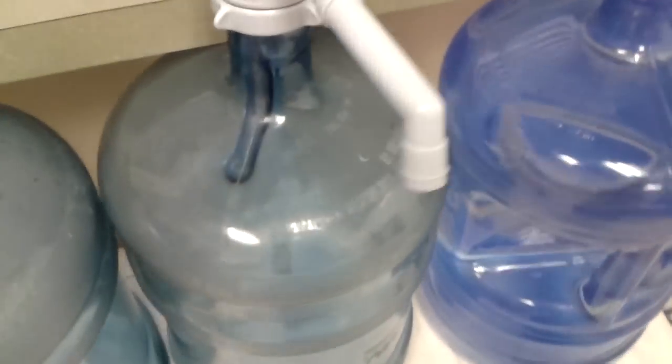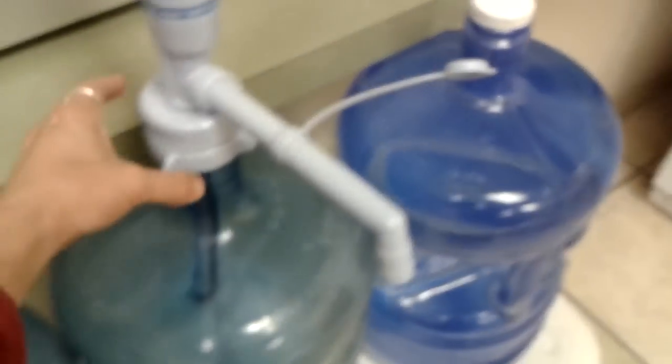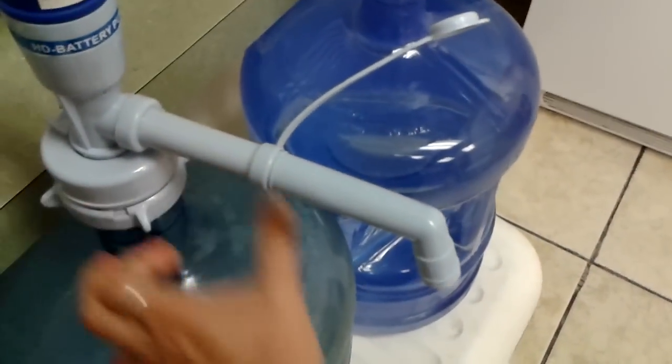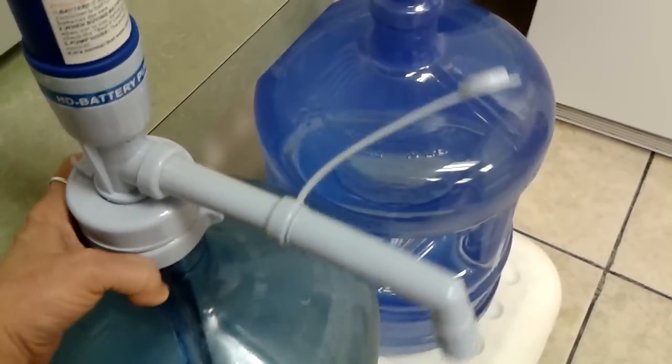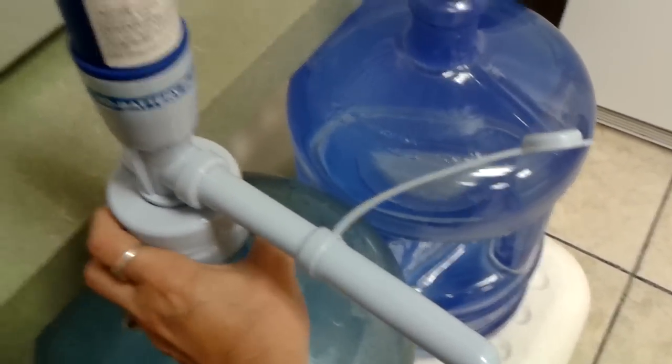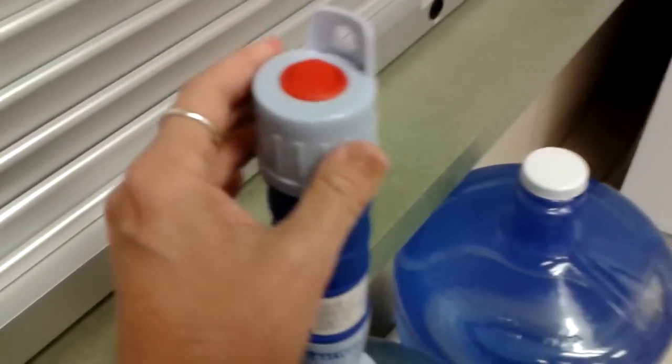Basically, you set it in the bottle and it has a screw ring. You just screw it on to tighten it, and it has a switch on top.